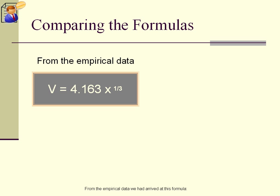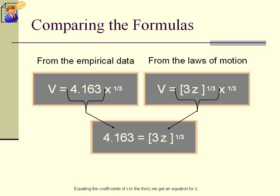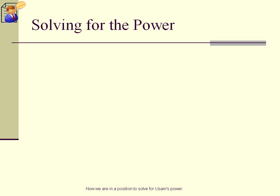From the empirical data we had arrived at this formula, and from the laws of motion we derived this formula. Comparing them, we see that both formulas are functions of X to the 3rd with constant coefficients, so the coefficients must be equal to one another. Equating the coefficients of X to the 3rd, we get an equation for Z. Now we are in a position to solve for Usain's power.